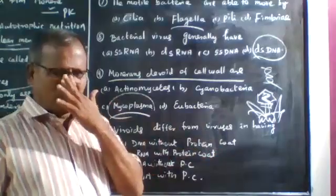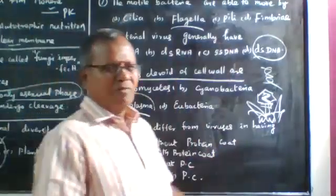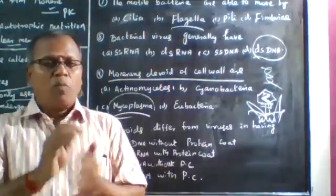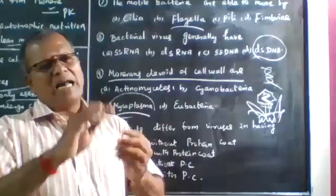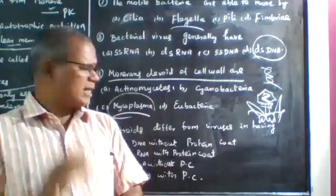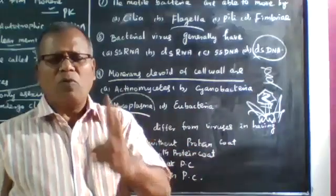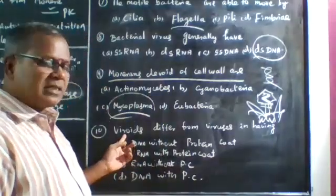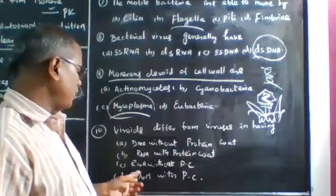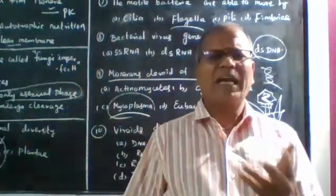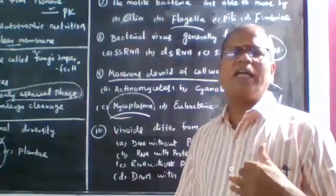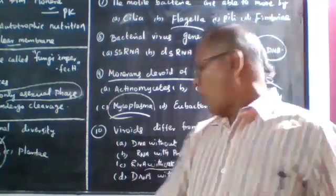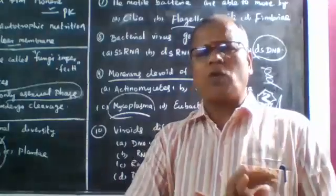Viruses have a nucleocapsid where nucleic acid is surrounded by a protein coat. Viroids differ in that they have RNA without a protein coat. If the nucleic acid is infectious in nature without a protein coat, it is called a viroid. If only the protein is infectious, it is called a prion. So viroids have RNA without a protein coat.